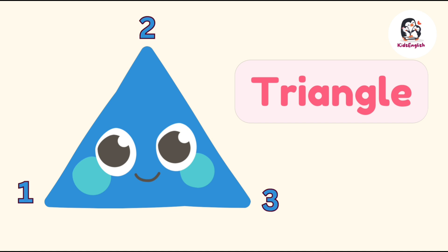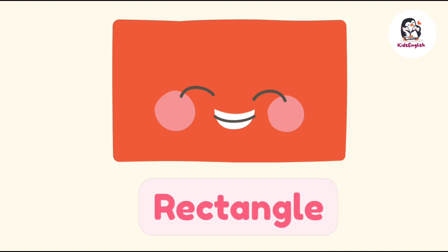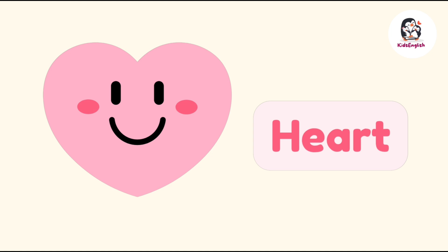Rectangle — rectangle has four sides, two long sides, two short sides, one, two, three, four. Square — square has four sides, one, two, three, four. Heart — this is a heart.